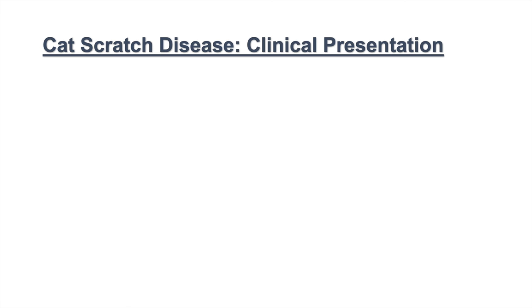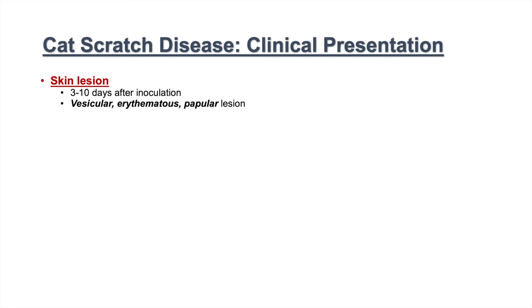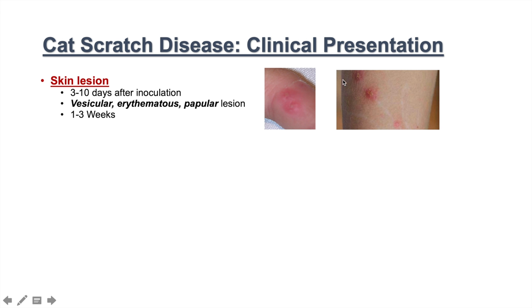The clinical presentation of cat scratch disease includes a skin lesion. If we get bitten or scratched by a cat, there's a lesion, but there's a particular lesion with cat scratch disease that occurs generally three to ten days after inoculation. It leads to a vesicular, erythematous, or papular lesion that persists for about one to three weeks. These papular-type lesions are the characteristic look of the skin lesion in cat scratch disease.